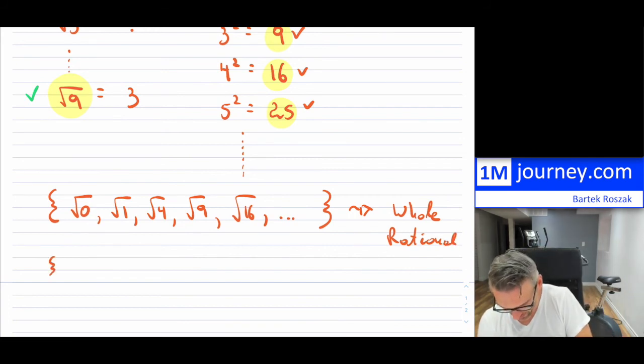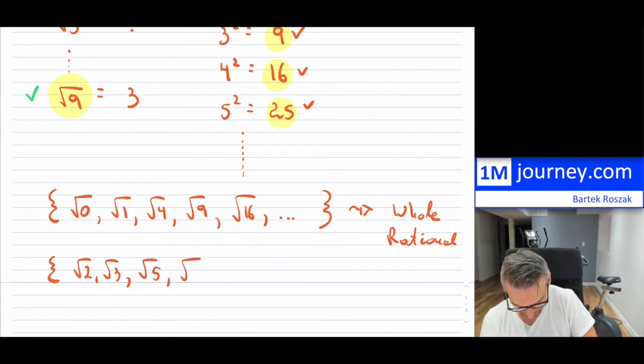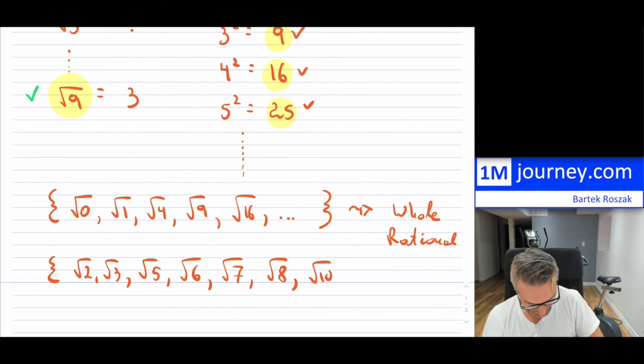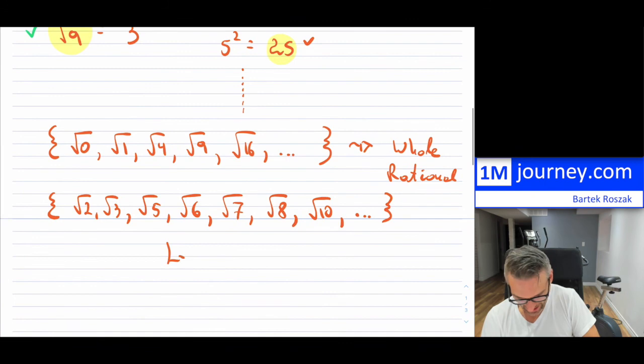And everything else, so if you take, so it's going to be square root of 2, square root of 3, square root of 5, square root of 6, square root of 7, square root of 8, and I guess square root of 10. So you get the gist of this. All of the answers to these are actually irrational, which is pretty neat.